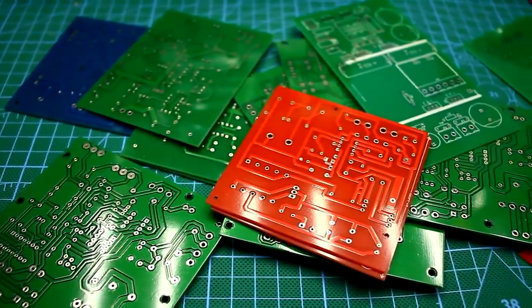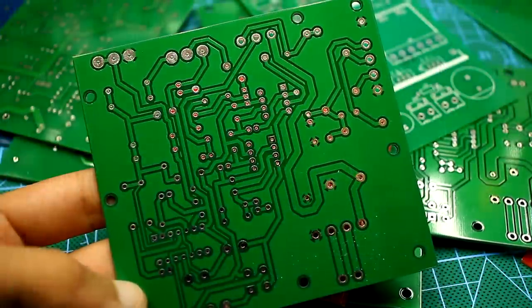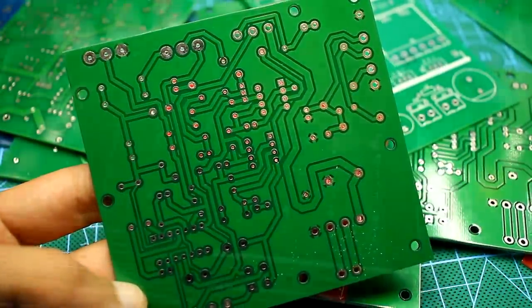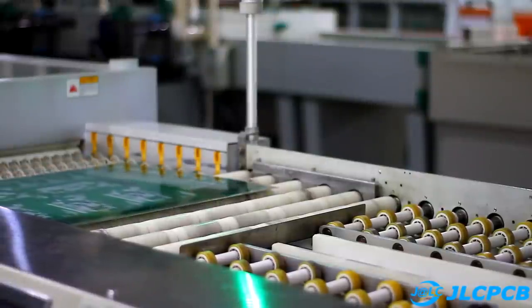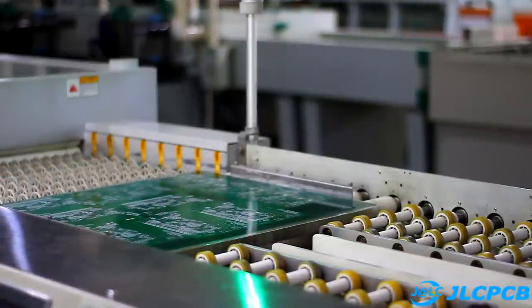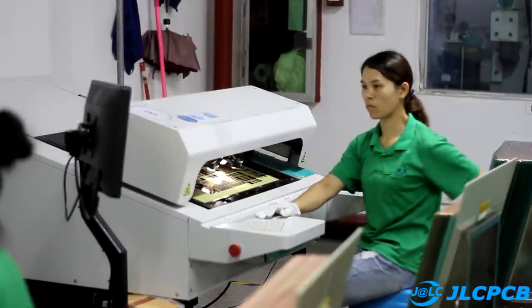But before we start, a few words about the sponsor of this video, about the company JLCPCB, which is one of the leaders in the field of production of printed circuit boards. You can order PCB of any complexity at the lowest prices. The price starts from $2 for 10 pieces. All links are in the description.